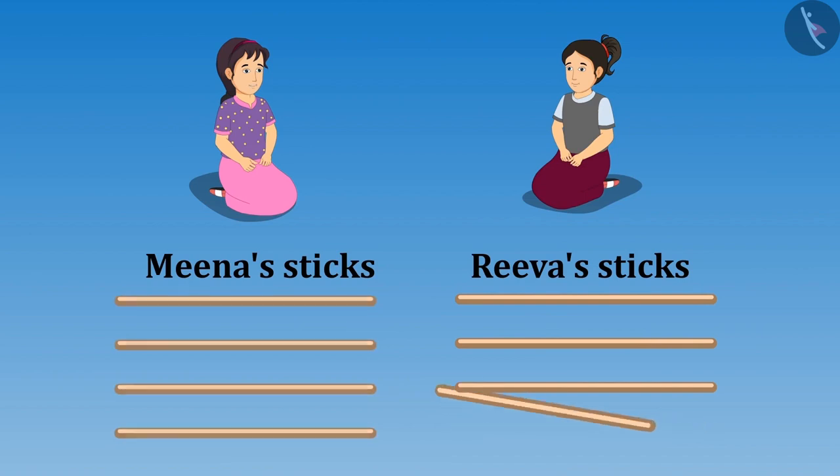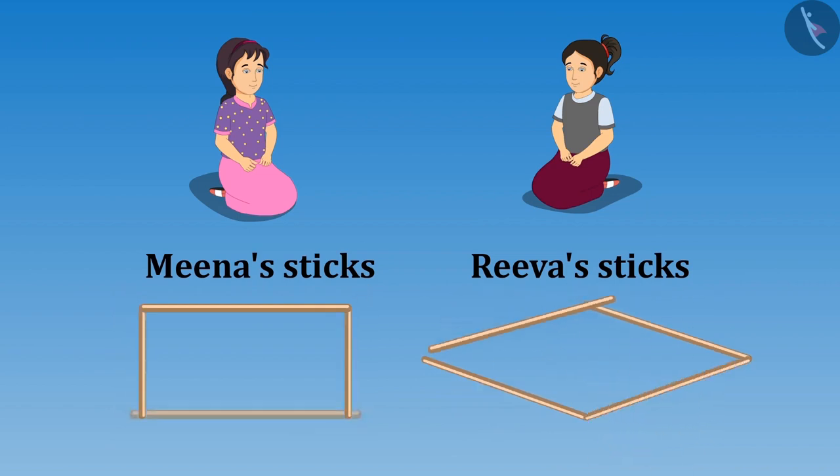Then Meena and Riva formed figures with their sticks and showed it to each other.